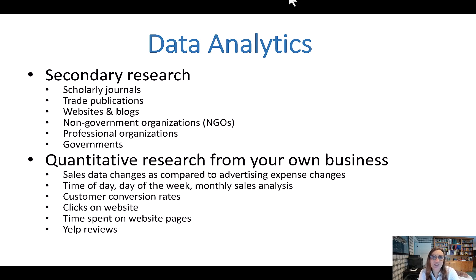Secondary research is data you get from an outside source. These are similar to the sources discussed in earlier lectures about understanding the industry and the area you want to start a business. Quantitative research can also come from your own business. You can look at how your sales changed in relation to advertising dollars spent, analyze your sales data to discover the time of day, days of week, or monthly sales trends, look at customer conversion rates — how many visitors to your website actually make a purchase — and look at clicks on your website and how much time is spent on each page. Of course, there are also Yelp reviews. These quantitative examples are excellent ways to measure and evaluate progress towards goals and objectives, as discussed in the business strategy lecture, showing how all these pieces tie together.